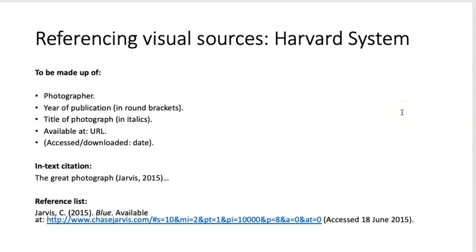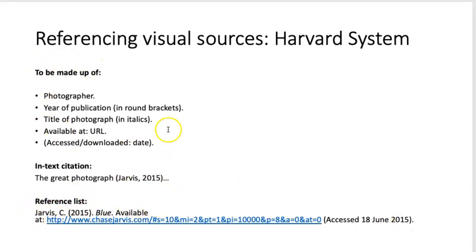If you're using the Harvard system, don't forget that you need to reference it properly. If it's a photograph, you're going to need the photographer, the year of publication, the title of the photograph in italics, and where it's available — the URL. If you're using it in the body of your work as an in-text citation, then following the Harvard system you would simply use the author name and the date of publication. When it's in the references at the end, you will put in all that information, making it a full citation.